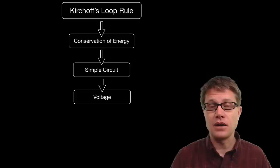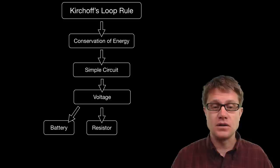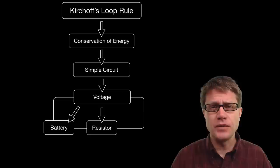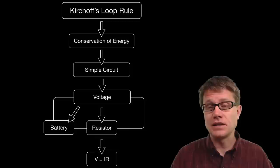For example, with a battery and a resistor in a simple loop, the voltage lift plus the voltage drop is going to sum to zero. To find the voltage of a resistor, we simply use Ohm's law. And that is all you have to know about Kirchhoff's loop rule in Physics 1.